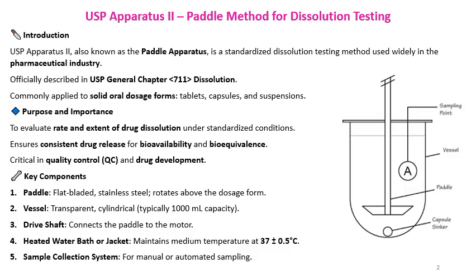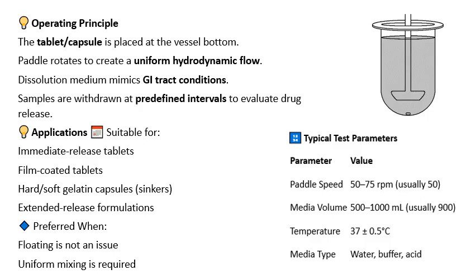Nowadays automated sampling systems are used. For the operating principle, the tablet or capsule is placed at the bottom. The paddle rotates to create a uniform hydrodynamic flow. The dissolution medium mimics GI tract conditions, like peristaltic movement. Samples are withdrawn at predetermined intervals to evaluate drug release. The paddle speed is typically around 50 rpm, though 75 rpm and 60 rpm can also be used. For suspension-type formulations, a lower speed like 25 rpm is used.